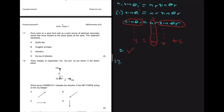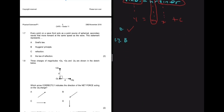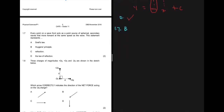Question 1.7 says: every point on a wavefront acts as a point source of spherical secondary waves that move forward at the same speed as the wave. This statement represents Huygens's principle, not Snell's law. Our answer for 1.7 is B.